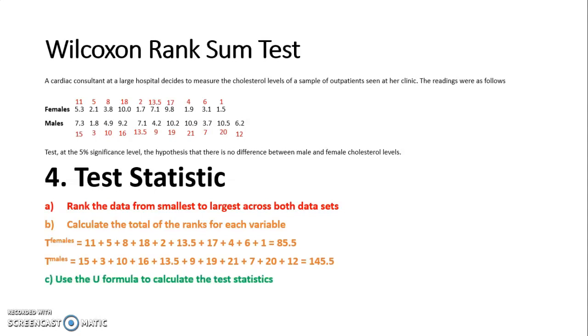The final step is I need to use the U formula. If you cannot remember the U formula it is at the top of the critical value table which is table 11. The formula is t minus fraction n bracket n plus 1 over 2. For females, I take 85.5 as my t, and there are 10 female pieces of data, so 10 bracket 10 plus 1 over 2, which gives me 30.5.